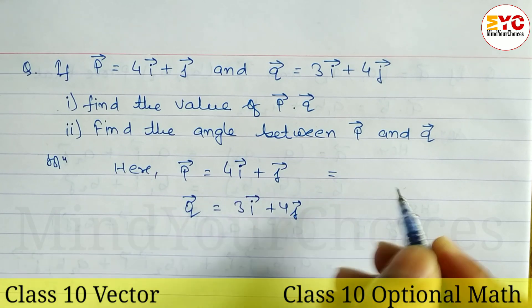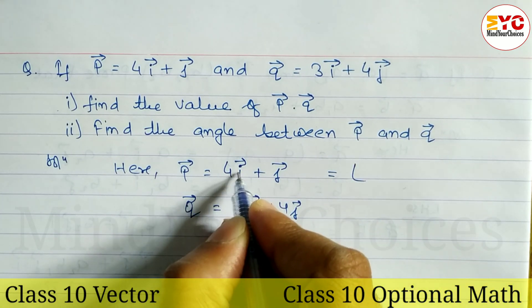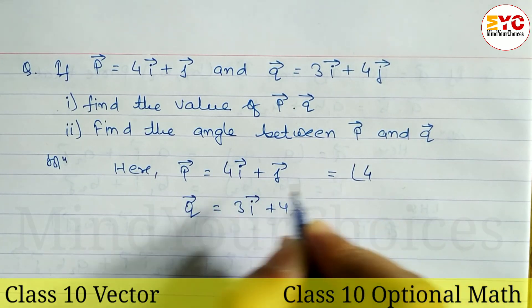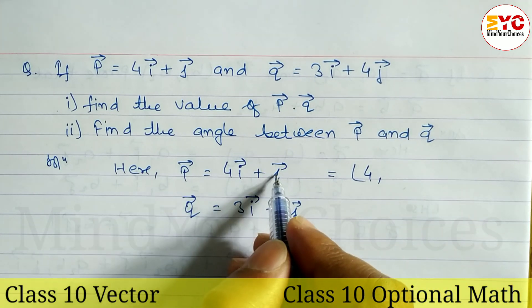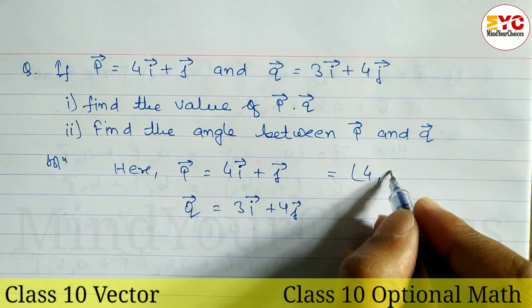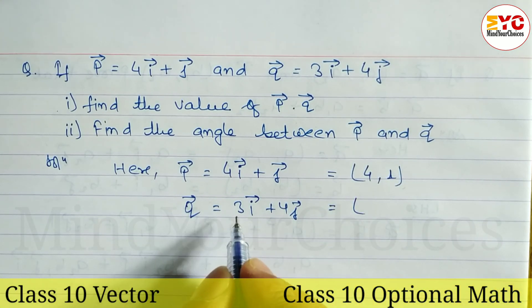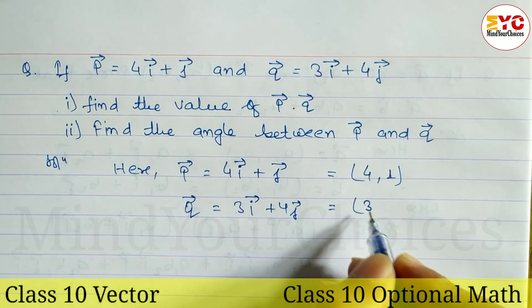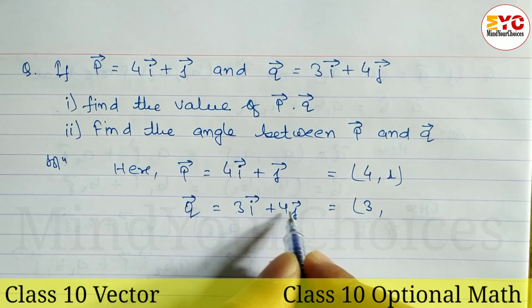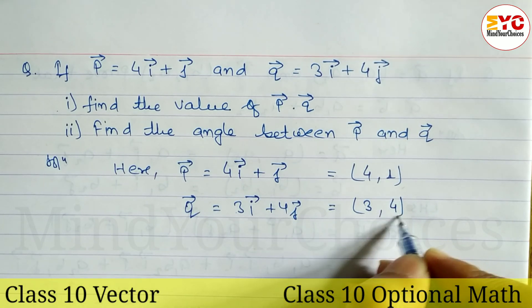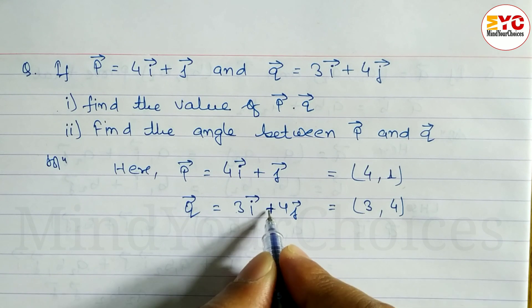4i plus j in coordinate form: i coefficient is 4, so we write 4. j coefficient is 1, so 4 comma 1 is the coordinate. For Q, i coefficient is 3, so we write 3. j coefficient is 4, so we write 4. So 3 comma 4.